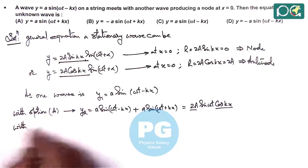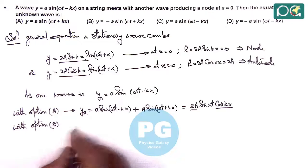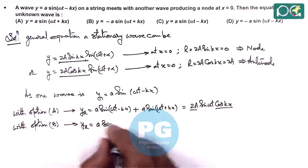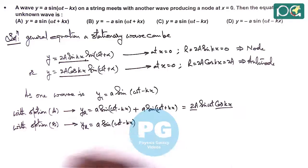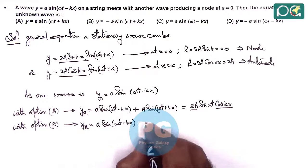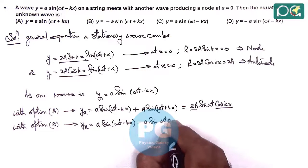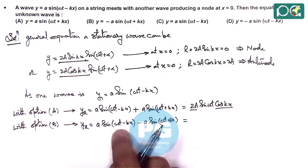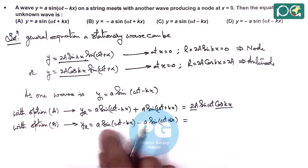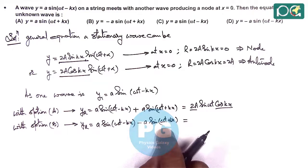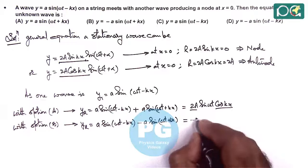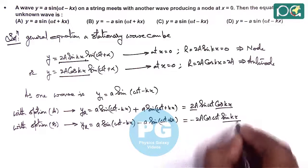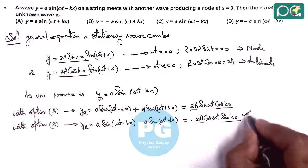Now with option b: the first wave is a·sin(ωt - kx), and the second wave with option b is a·sin(ωt + kx). If we subtract the two, using sin(C) - sin(D) = 2·cos((C+D)/2)·sin((C-D)/2), this results in -2a·cos(ωt)·sin(kx). We can see we have a sin(kx) term, which means this is the valid answer.